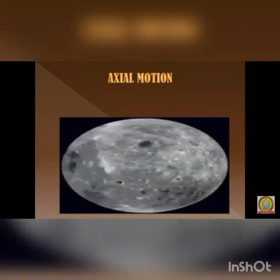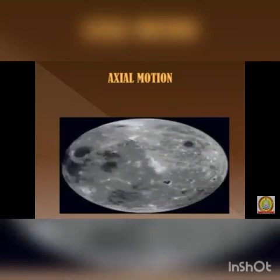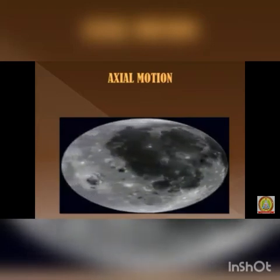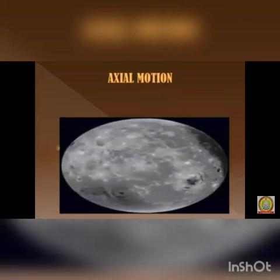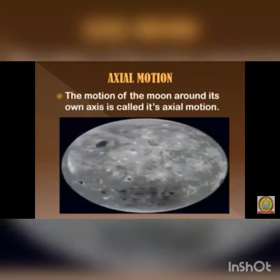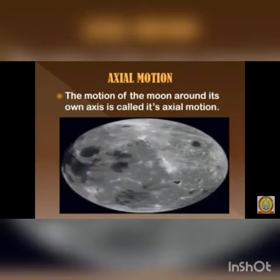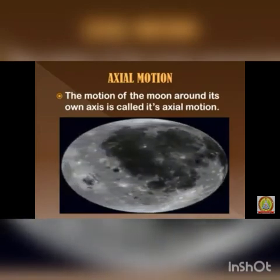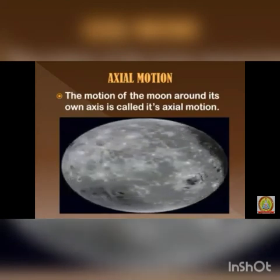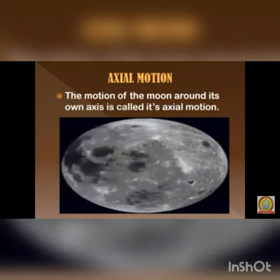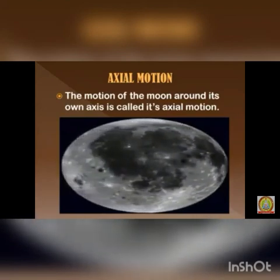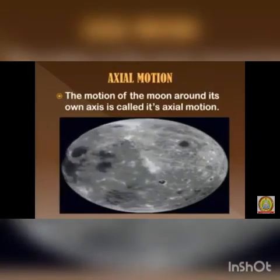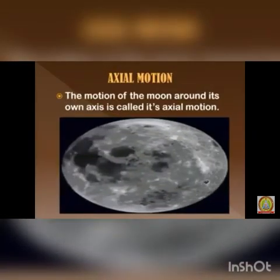First, let us clear the concept of axial and orbital motions. Students, in the previous lesson we studied that the earth takes 24 hours to rotate around its own axis and 365 days and 6 hours to complete one revolution. Similarly, the moon also has axial and orbital motions.